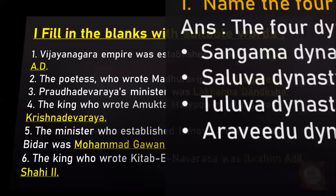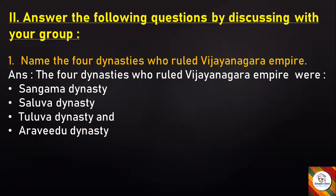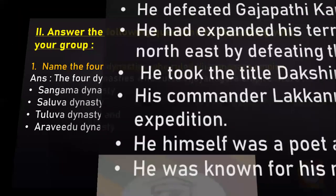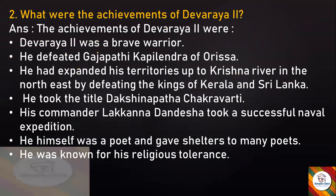Let's move to the second main section: answer the following questions. The first question is: Name the four dynasties who ruled the Vijayanagara Empire. Answer: The four dynasties who ruled the Vijayanagara Empire were the Sangama dynasty, Salua dynasty, Tuluwa dynasty, and Aravidu dynasty.